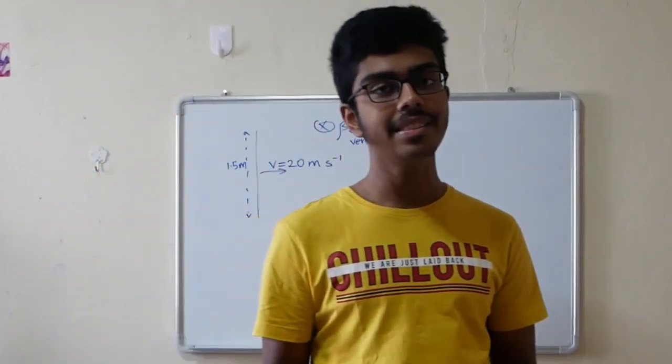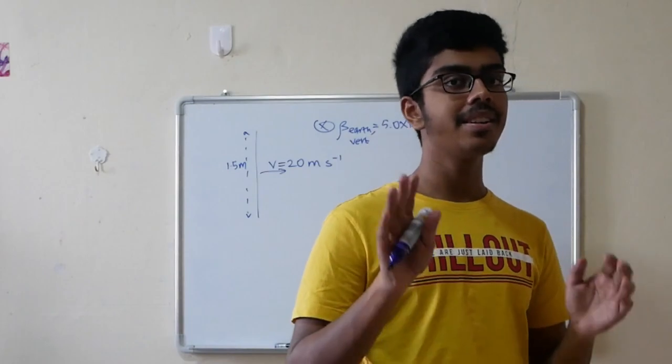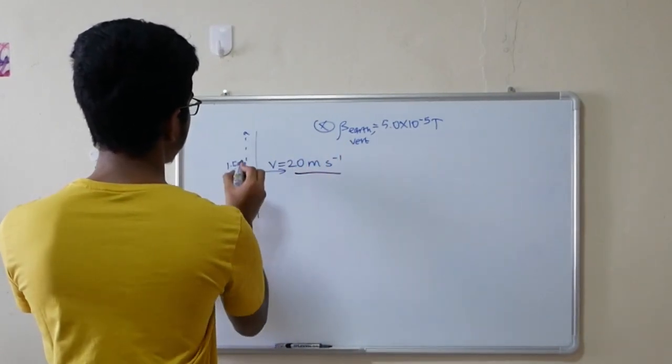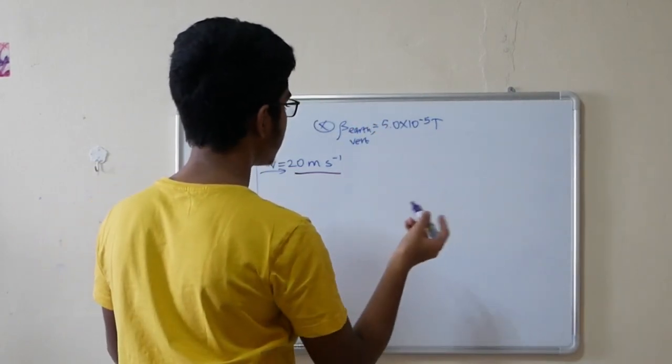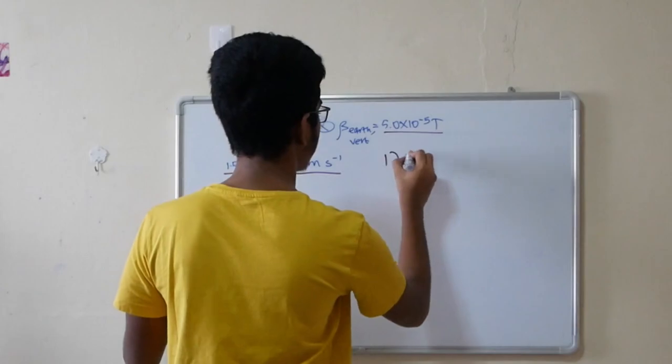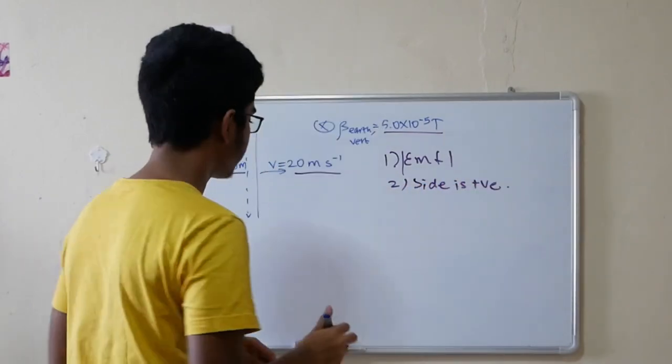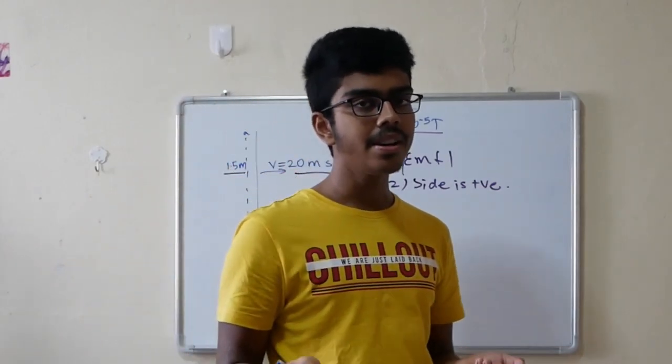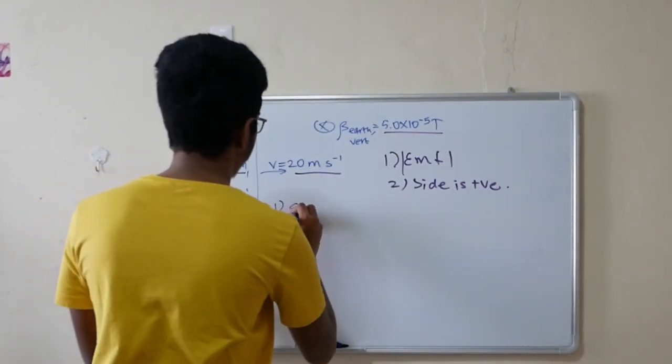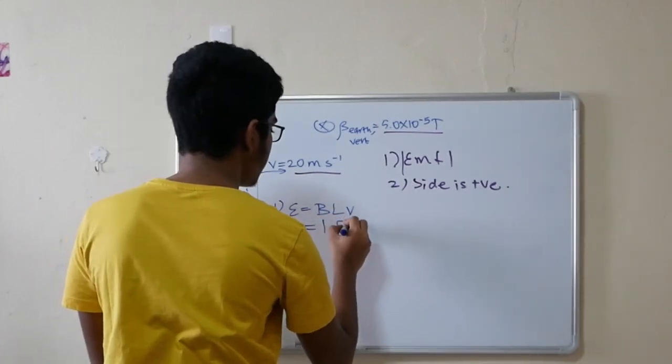Here is a question from Raffles Institution H2 Prelims 2010, which is where I studied. Here we have a rod that is moving with velocity 20 meters per second. Length of the rod is 1.5 meters. The vertical component of the earth's magnetic field is 5.0 × 10⁻⁵ tesla acting into the plane. The question is, number one, what is the magnitude of the EMF? Number two, which side of the rod is positive? To calculate the magnitude of the EMF, you just need to use the formula, just substitute in the various values. E equals BLV. You just substitute in all the values and you get 1.5 millivolts.